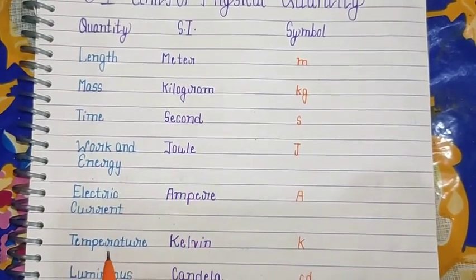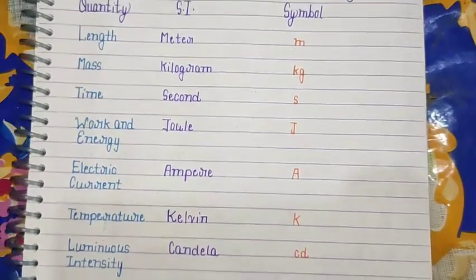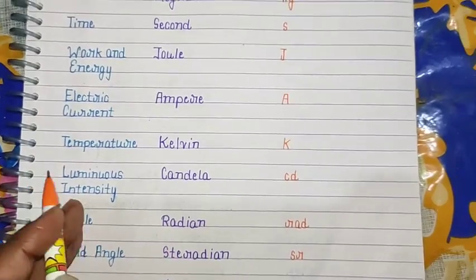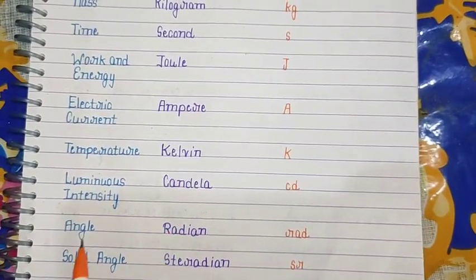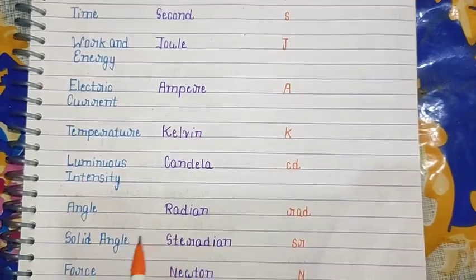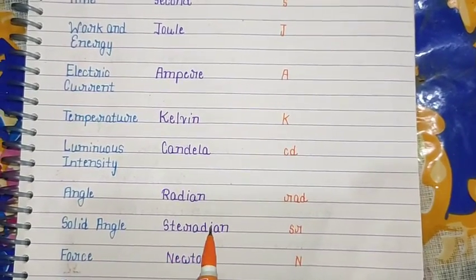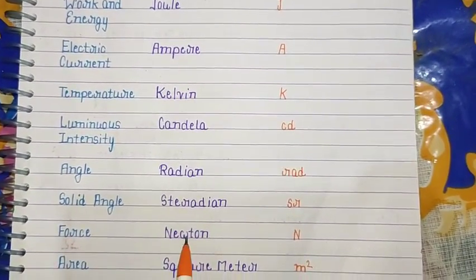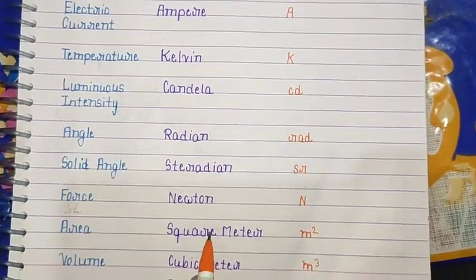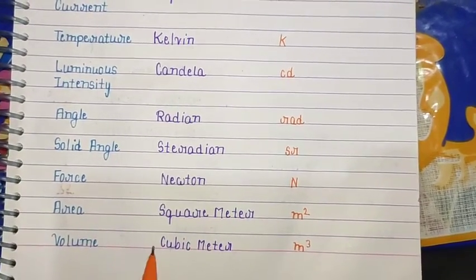Temperature - Kelvin (K). Luminous intensity - candela (cd). Angle - radian (rad). Solid angle - steradian (sr). Force - Newton (N). Area - square meter (m²). Volume - cubic meter (m³).